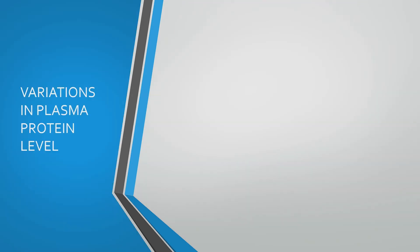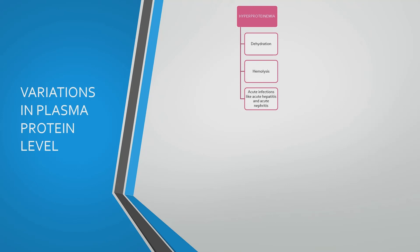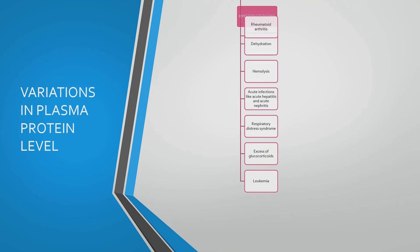Now we come to different conditions where plasma protein level varies. These are the conditions where hyperproteinemia is seen: dehydration, depression, hemolysis, acute infections like acute hepatitis and acute nephritis, respiratory distress syndrome, excess of glucocorticoids, leukemia, rheumatoid arthritis, and alcoholism.